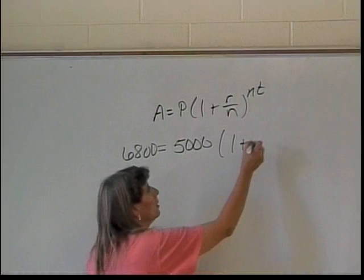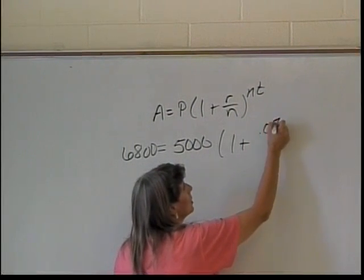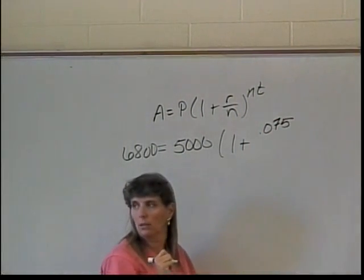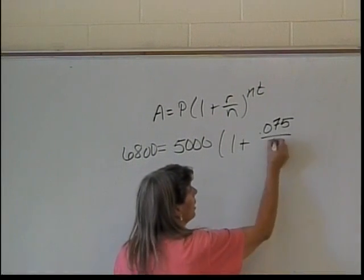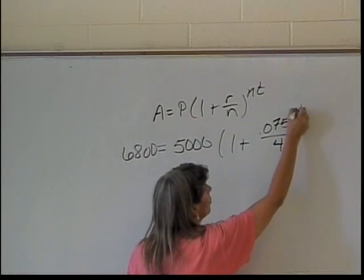I have 1 plus, because that's always there. R is 0.075. Do I have N? 4, because I'm compounding quarterly. That's 4 times a year, so that's 4.